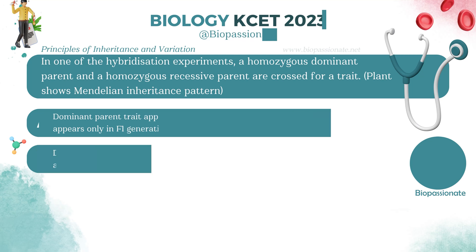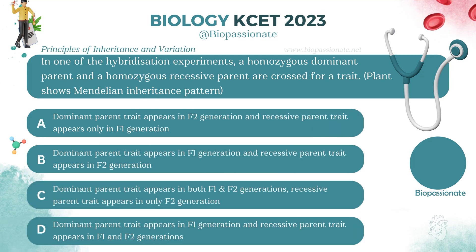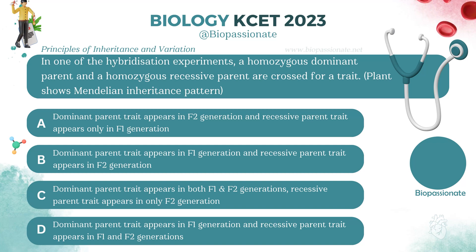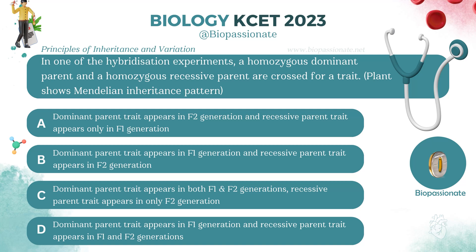In one of the hybridization experiments, a homozygous dominant parent and a homozygous recessive parent are crossed for a trait. The plant shows Mendelian inheritance pattern. Answer: Option C.